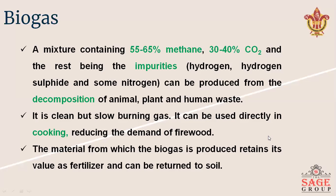Biogas is a mixture containing 55% to 65% methane and 30 to 45% carbon dioxide, with the rest being impurities such as hydrogen, hydrogen sulfide, and some nitrogen. It can be produced from the decomposition of animal, plant, and human waste. It is a clean but slow-burning gas.